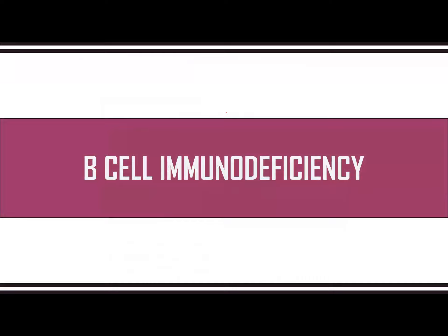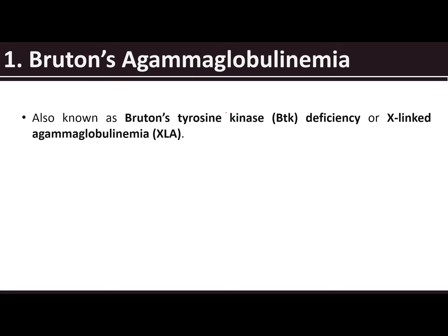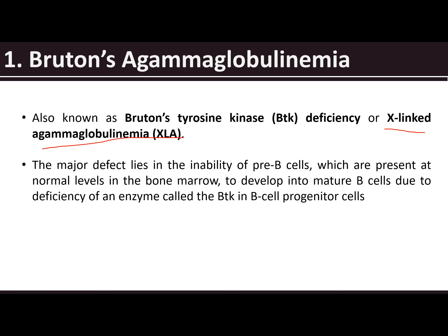Let's start with B cell immunodeficiency. Under B cell deficiency, we have agammaglobulinemia, also known as Bruton's agammaglobulinemia, also known as Bruton's tyrosine kinase deficiency or X-linked agammaglobulinemia. The major defect lies in the inability of pre-B cells — present at normal levels in the bone marrow — to develop into mature B cells, due to the deficiency of an enzyme called BTK in B cell progenitor cells.